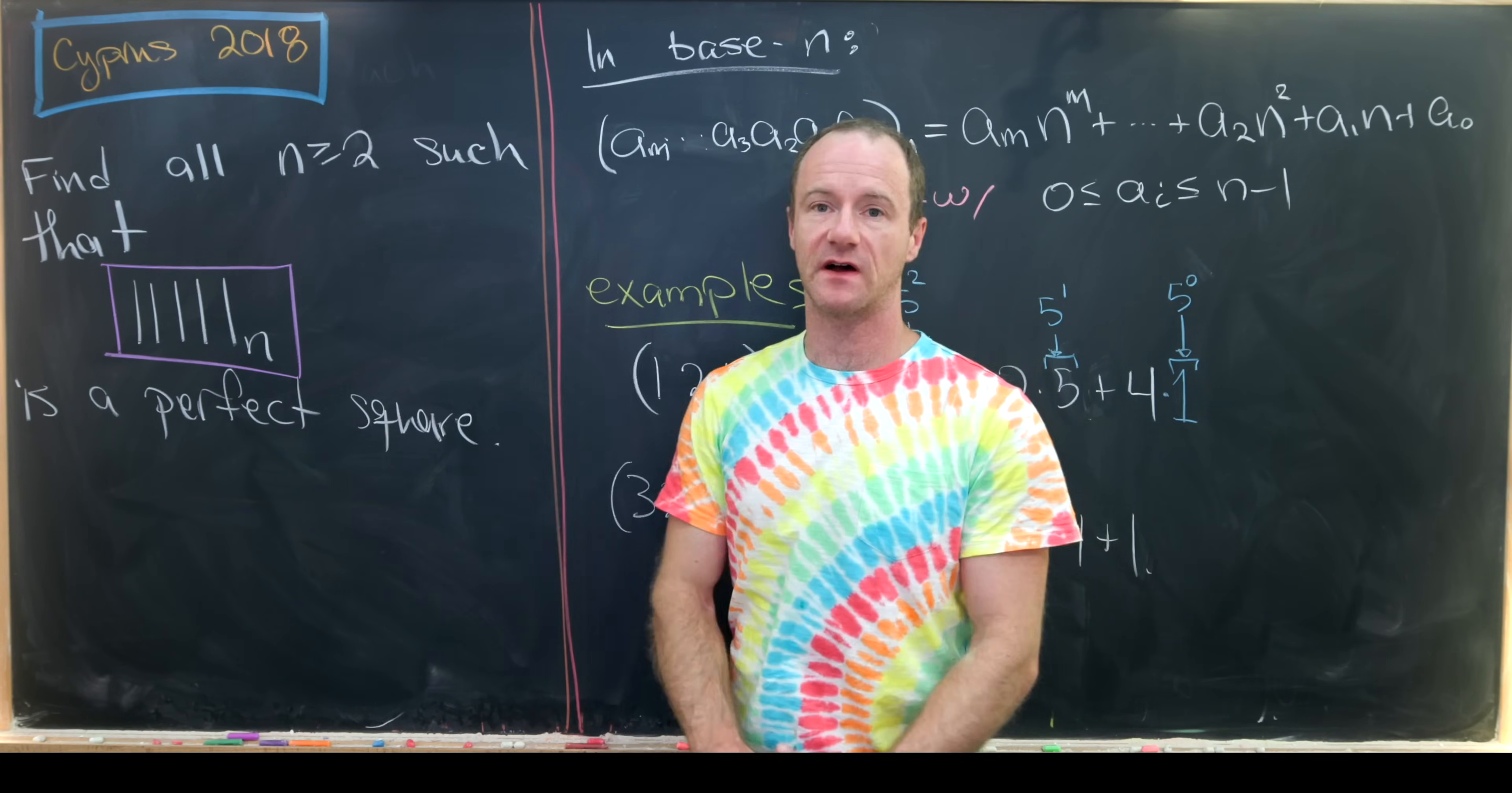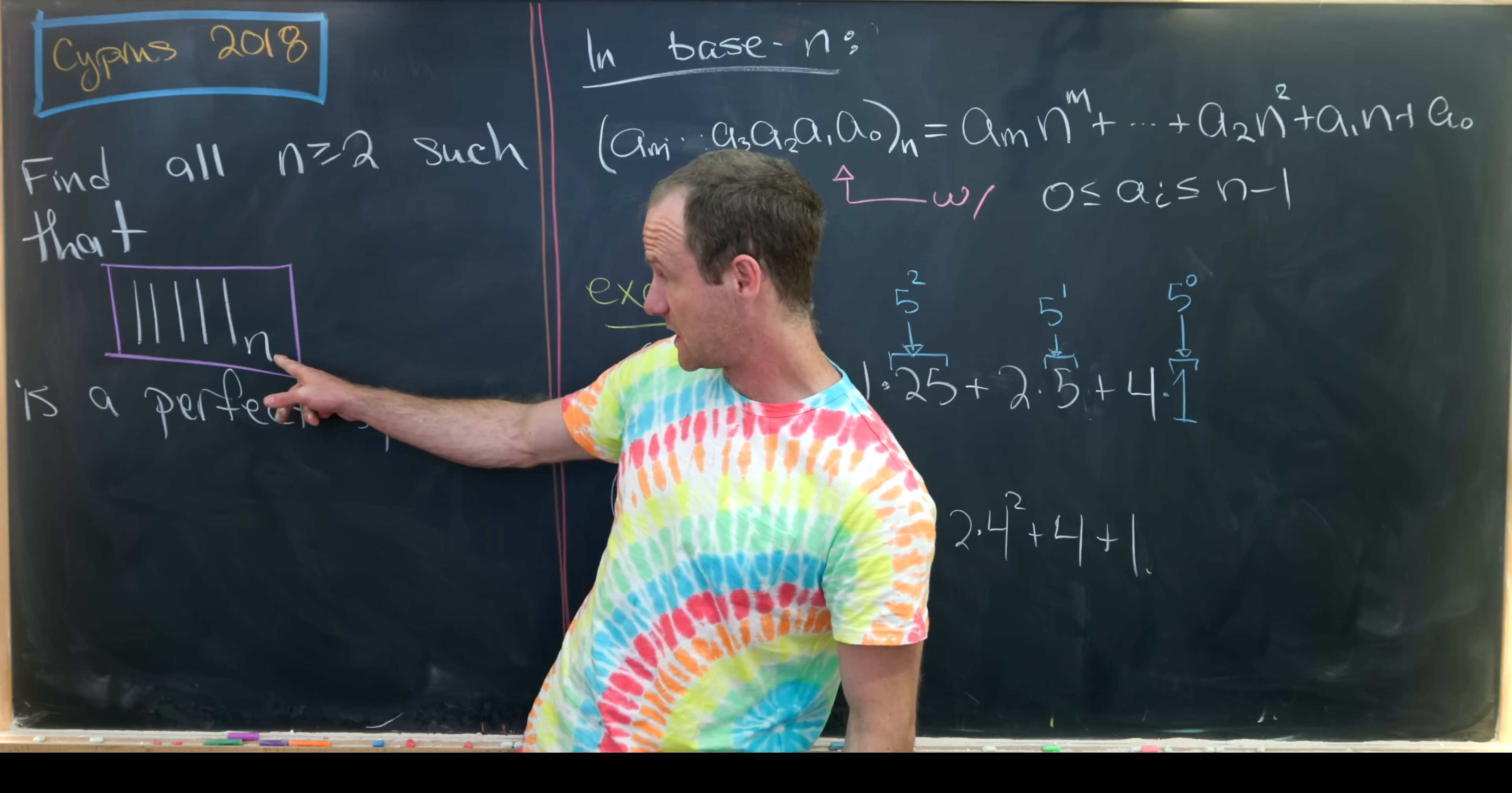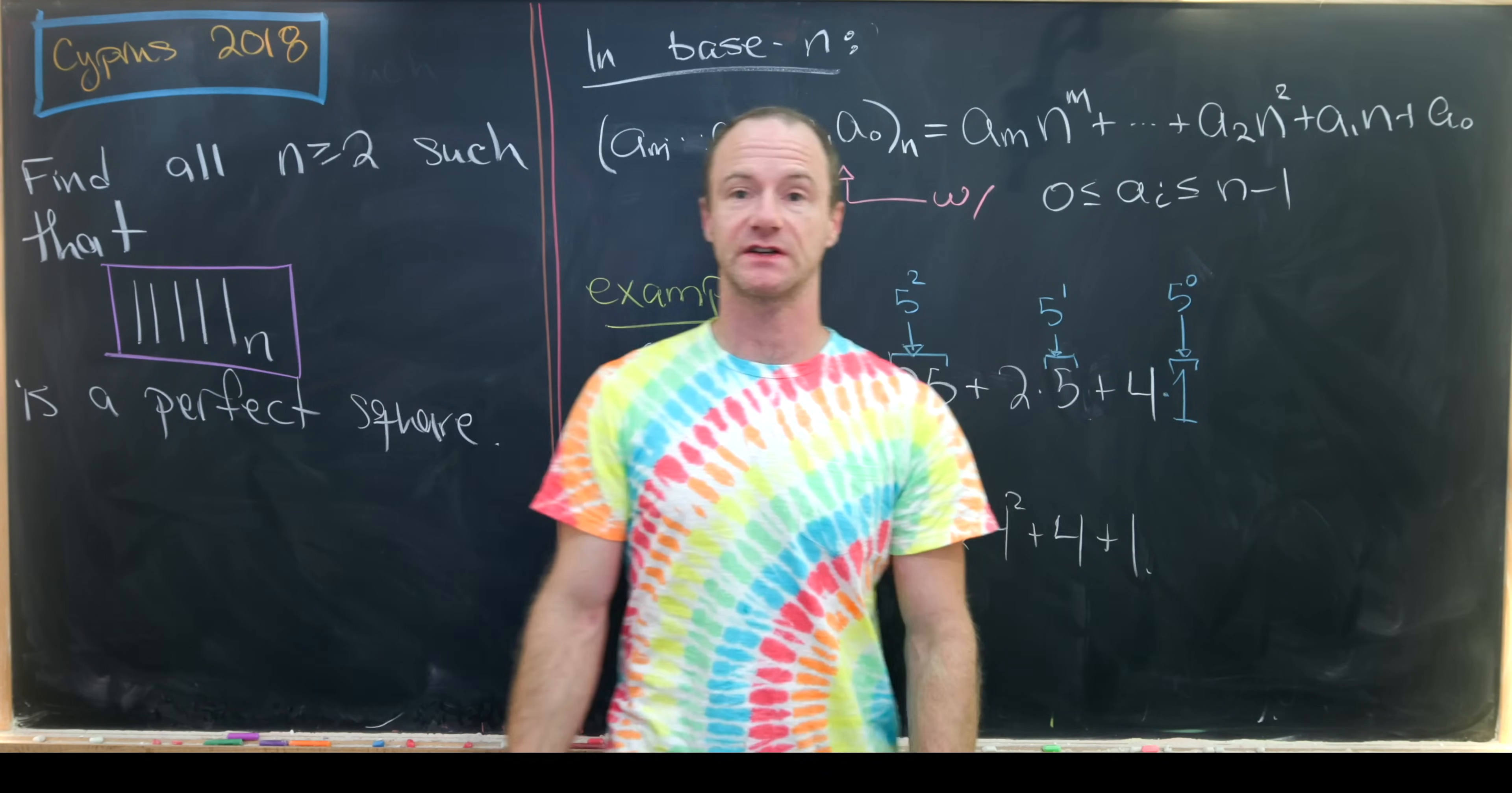Our goal is to find all natural numbers that are bigger than or equal to two, such that in base n, the number 11111, that's five ones, is a perfect square.